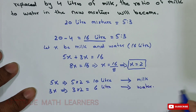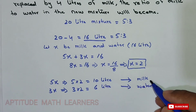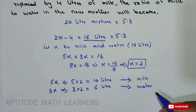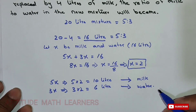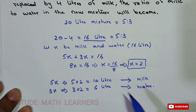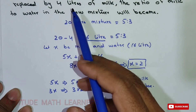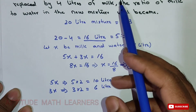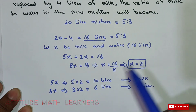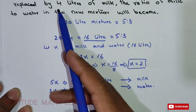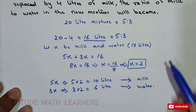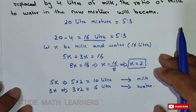So in the 16 litres, we have 10 litres of milk and 6 litres of water. Now the main step is: if 4 litres of this mixture from the whole mixture are replaced by 4 litres of milk, we just need to add the 4 litres of milk.